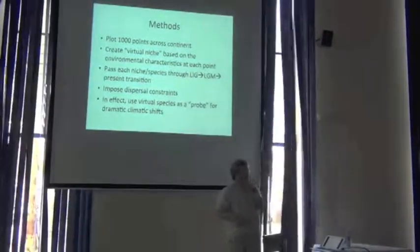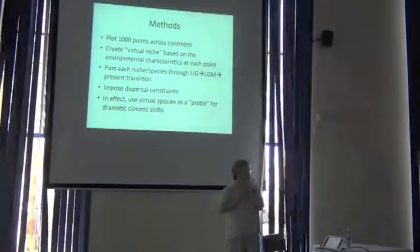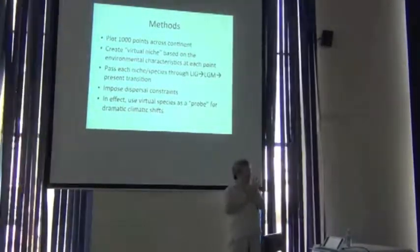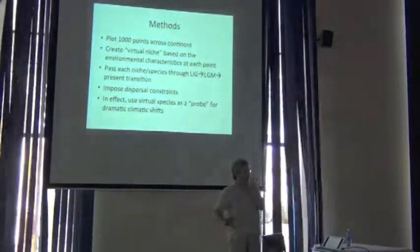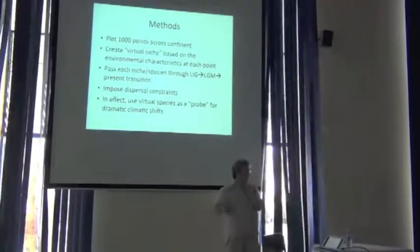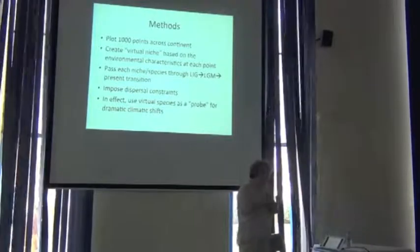If this is the last interglacial range, and this is the last glacial maximum range, then there's this area of overlap, and our species survives. But if the two areas are like this, then our species doesn't survive. And again, it's the warm to cool transition, and then the cool to warm transition.